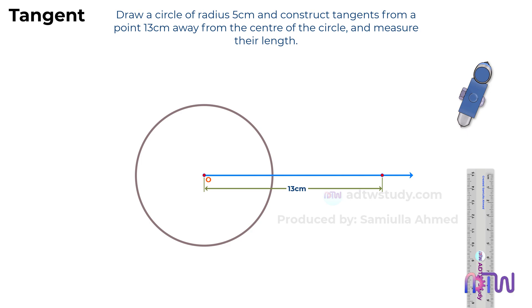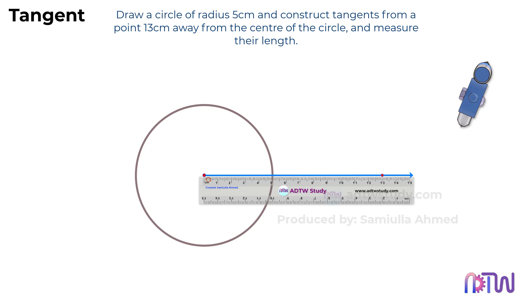Next, we need to mark a point which is 13 centimeters away from the center. To do so, take a ruler, keep it like this, and mark a point 13 centimeters away from the center as shown.